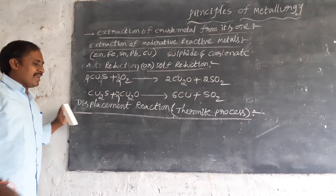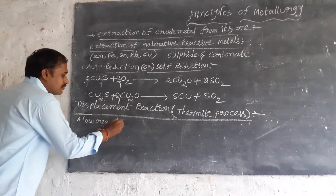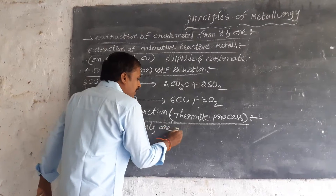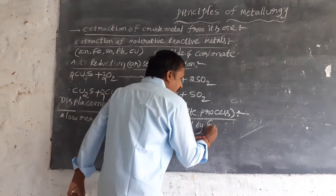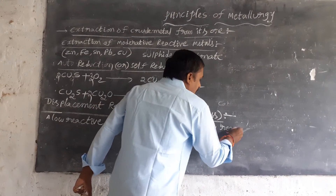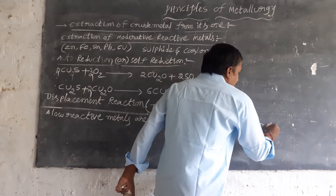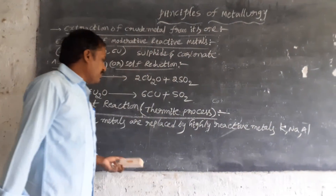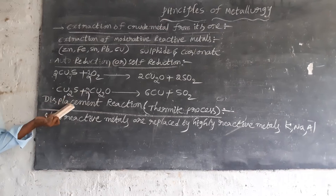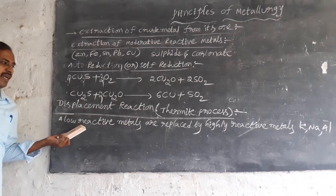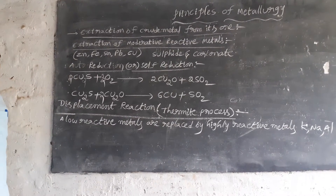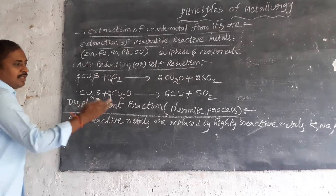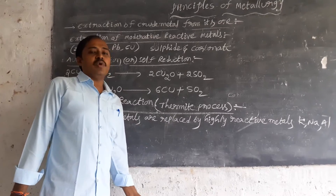In this process, low reactive or moderately reactive metals are replaced by highly reactive metals. Highly reactive metals include potassium, sodium, aluminium, and calcium. Moderately reactive metals are replaced by highly reactive metals — that is called the thermite process.